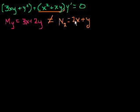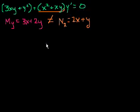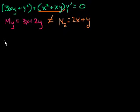But what if there were some function we could multiply both sides of this equation by that would make it exact? Let's call that mu. I want to multiply both sides by some function mu and see if I can solve for it. As a simplification, mu could be a function of x and y, of just x, or of just y. If it's a function of x and y it becomes much harder to solve. So let's assume mu is a function of x only.